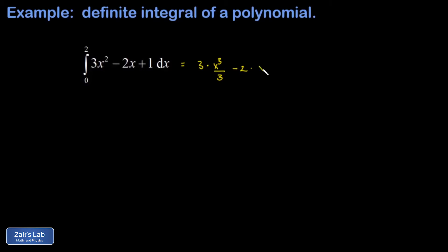In the third term, 1 is just x to the 0, and I follow the same rule. I add 1 to the exponent, so that's x to the first divided by 1.